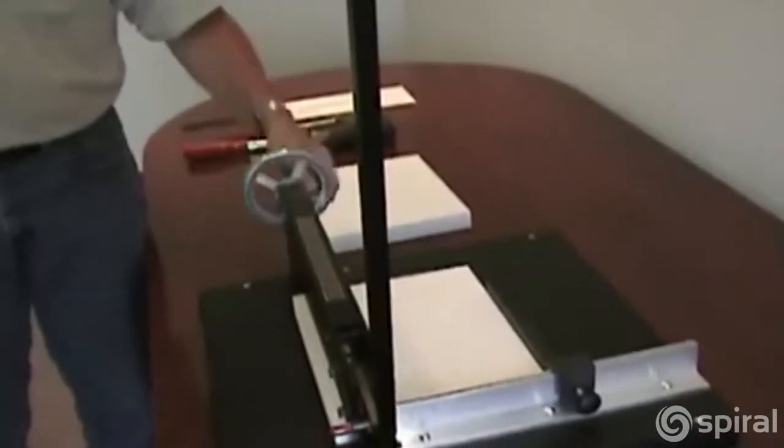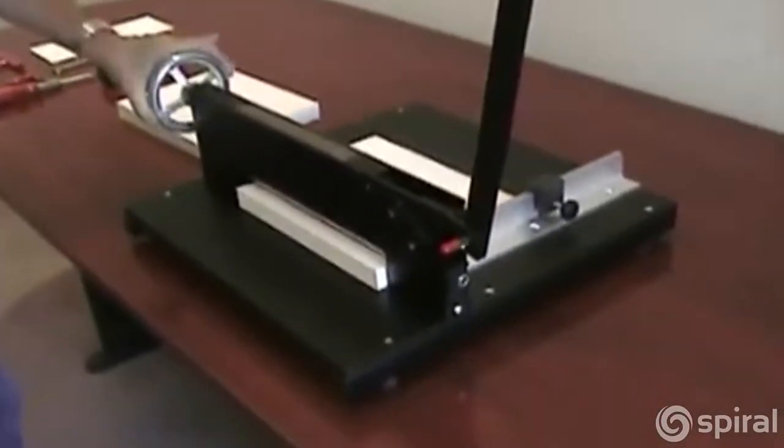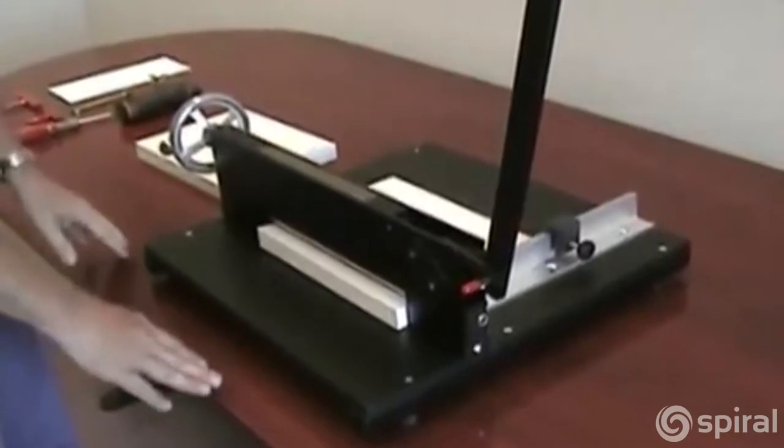Once your paper is nice and square, you want to lower the clamp. And the clamp doesn't need to be excessively tight. If the clamp is just snug, that's fine. If you've got a nice sharp blade, it will cut right through the stack.